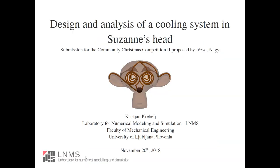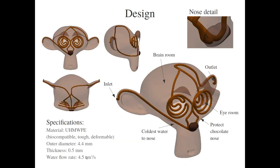This submission is from the Faculty of Mechanical Engineering at the University of Ljubljana in Slovenia. This is his final design of the cooling system for the monkey head. He took UHM VPA as a material for the tubing with a certain outer diameter and thickness, and a water flow rate of 4.5 cubic centimeters per second.